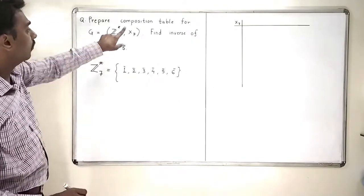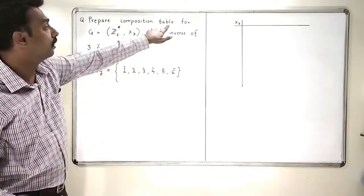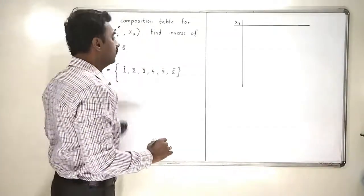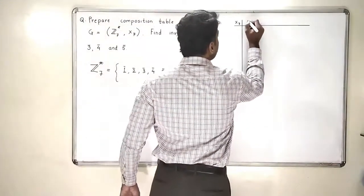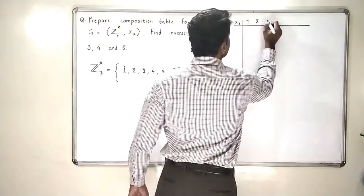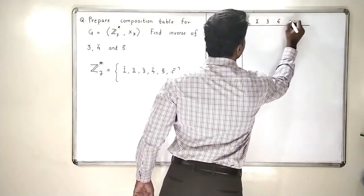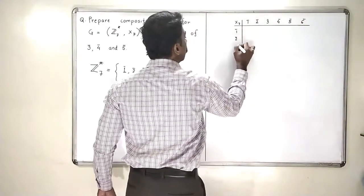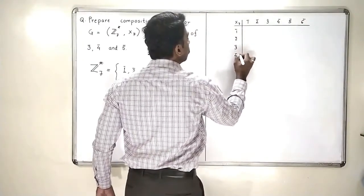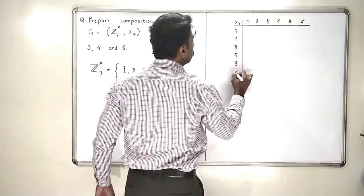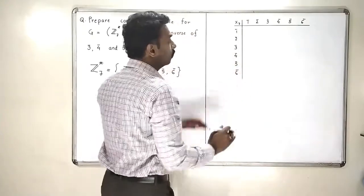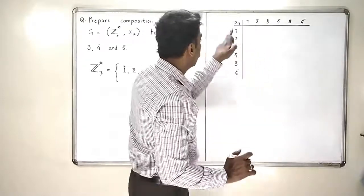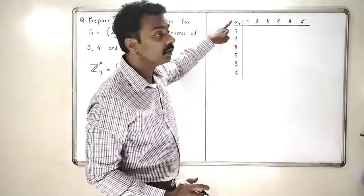We are supposed to prepare a composition table, so I will write the elements — 1-bar, 2-bar, 3-bar, 4-bar, 5-bar, 6-bar — along both axes. We will multiply the elements in our usual way as discussed in previous sections, using multiplication modulo 7.